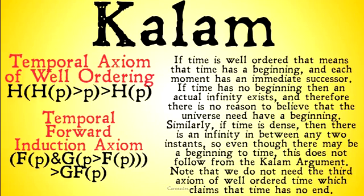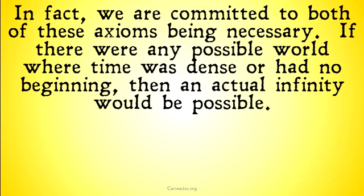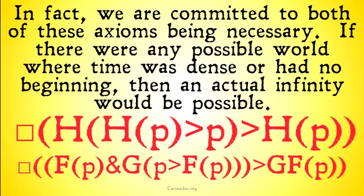Note that we don't need the third axiom of well-ordered time, which claims that time has no end. Well-ordered time is kind of like time corresponding to the natural numbers — check out my videos on well-ordered time and the axioms of well-ordering for more on that. But basically, for the Kalam argument to work, these two axioms — that time has a beginning and that each moment has an immediate successor — need to be present in our time stream. In fact, we are committed to both of these axioms being necessary.